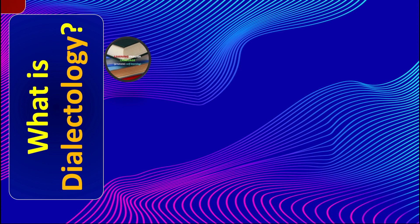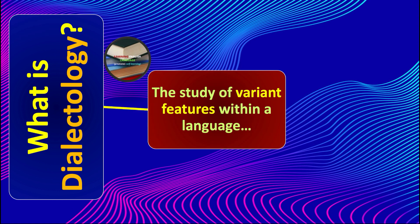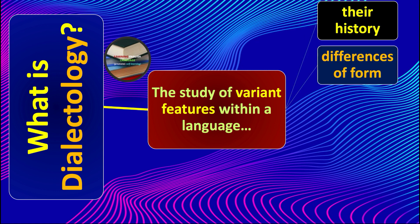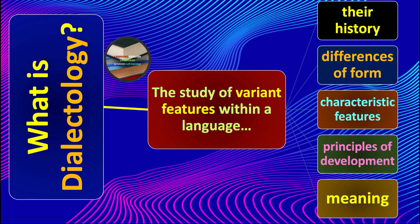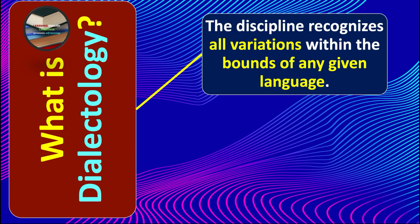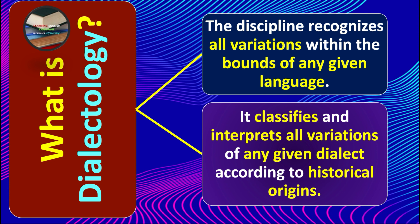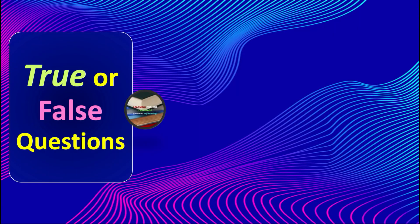Dialectology is basically about the study of variant features within a language. Variant features means the various characteristics which operate within a language — including their history, differences of form, characteristic features, principles of development, meaning, and their relationships. Dialectology is the discipline which recognizes all variations within the bounds of any given language. It classifies and interprets all variations of any given dialect according to historical origins.